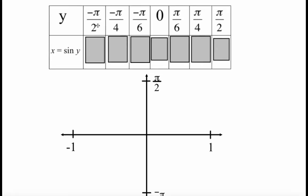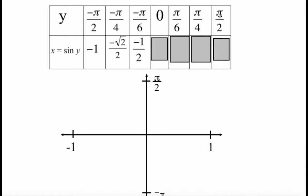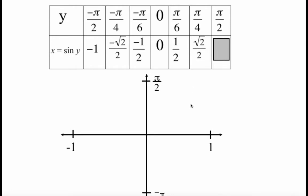Plugging in y values: negative pi over 2 is the same as 3 pi over 2, so sine of negative pi over 2 is negative 1. For negative pi over 4, same as 7 pi over 4, the sine is negative root 2 over 2. For negative pi over 6, same as 11 pi over 6, the sine is negative 1/2. Sine of 0 is 0. Sine of pi over 6 is 1/2. Sine of pi over 4 is root 2 over 2. And sine of pi over 2 is 1.